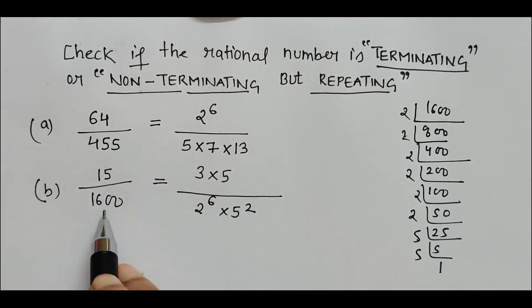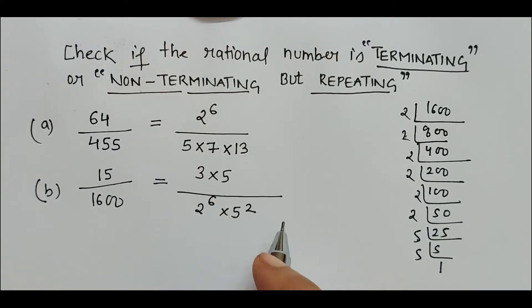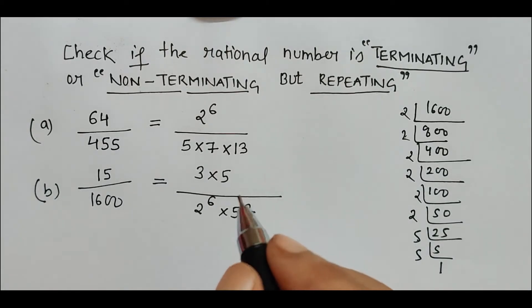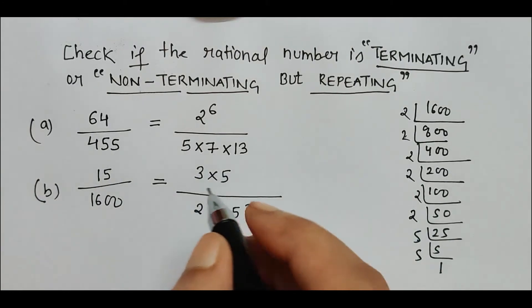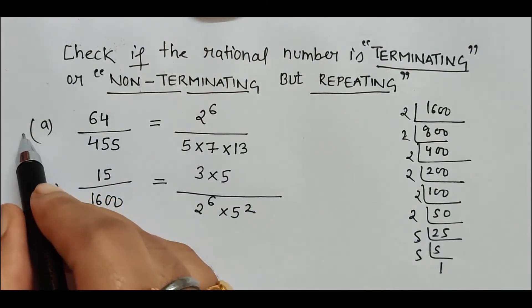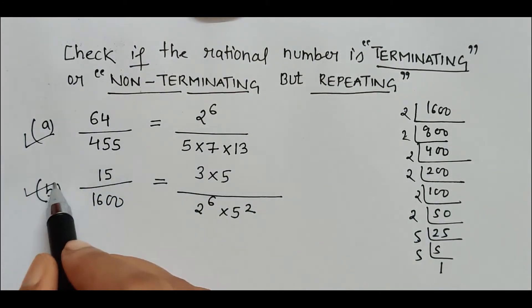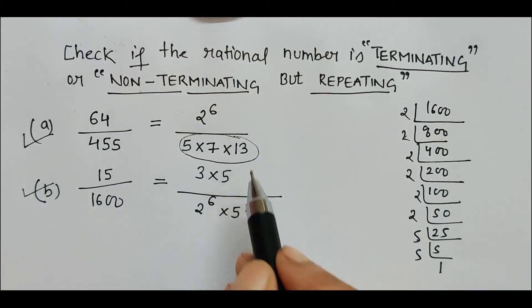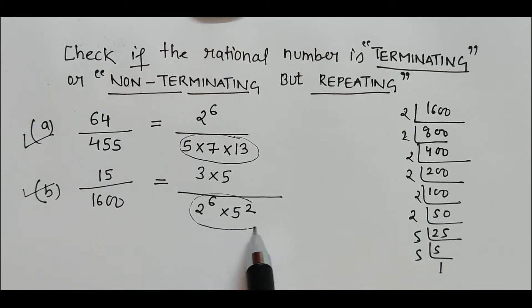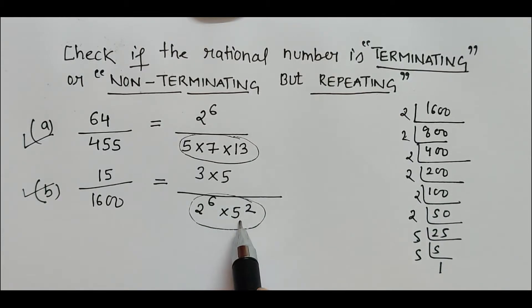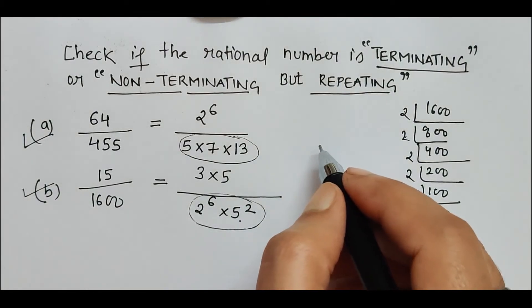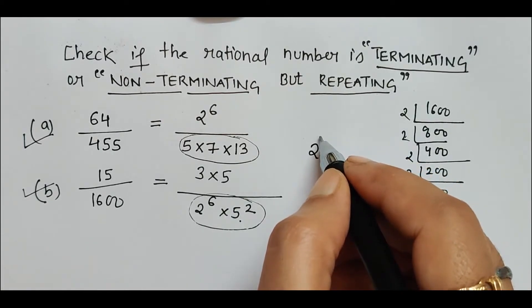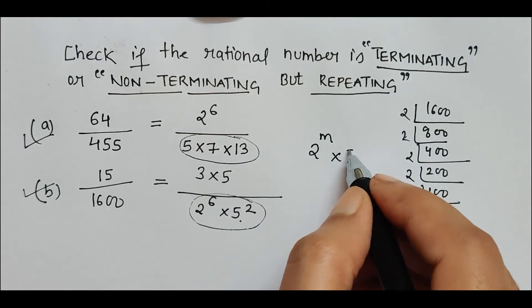Now the important thing to be checked is the denominator for each rational number. Here the denominator is 5 into 7 into 13. Here the denominator has the base 2 and 5 only. The main thing is, always keep in mind: 2 to the power n into 5 to the power n.